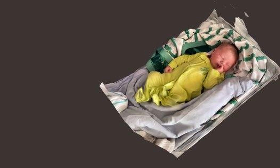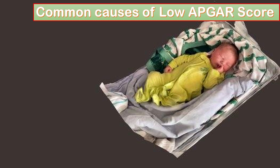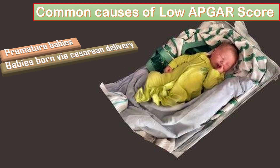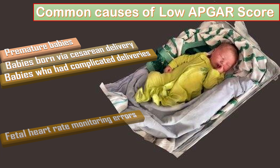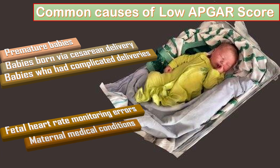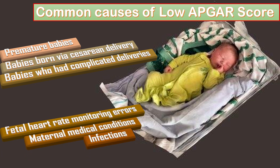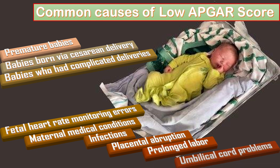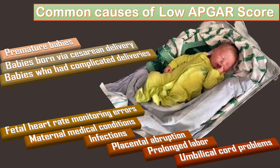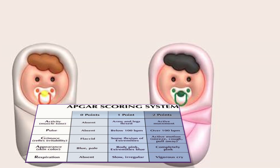What are the common causes of low APGAR score? Doctors expect that some babies may have lower APGAR scores. Those conditions include premature babies, babies born via cesarean delivery, fetal heart rate monitoring errors, maternal medical conditions, infections, placental abruption, prolonged labor, and umbilical cord problems.